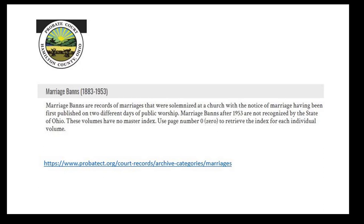Marriage banns: when a man and woman decided to get married, they'd go to the priest and say they're getting married on this date. The priest would read it at mass — 'this is the first reading of the banns, second reading the next Sunday, third reading the following Sunday' — and then they typically got married the next week. This gave people in the parish a chance to say 'I know so-and-so, they're already married, or they're divorced, or these two are really first or second cousins.' You could also get a license outside of Hamilton County and still get married in a church in Hamilton County, so if you don't find the license, try Covington, Clermont County, Butler County, and so forth.